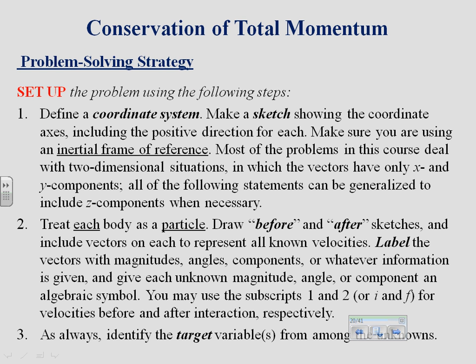You have to define a coordinate system — set up your x and y axes and treat each object as a particle. It's really important to draw before and after sketches and include vectors to represent the velocities. Make sure you're paying attention to the direction of velocity. For one-dimensional motion, a velocity in one direction will be positive and a velocity in the other direction will be negative. Label which is your positive or negative direction.